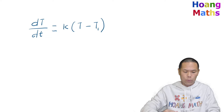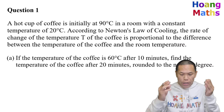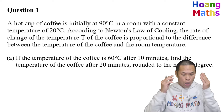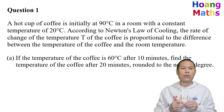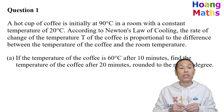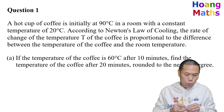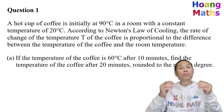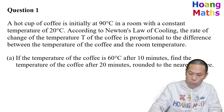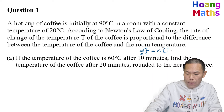Let's go through one example. A hot cup of coffee initially at 90 degrees Celsius is in a room with a constant temperature of 20 degrees Celsius. According to Newton's law of cooling, the rate of change of the temperature of the coffee is proportional to the difference between the temperature of the coffee and the room temperature.